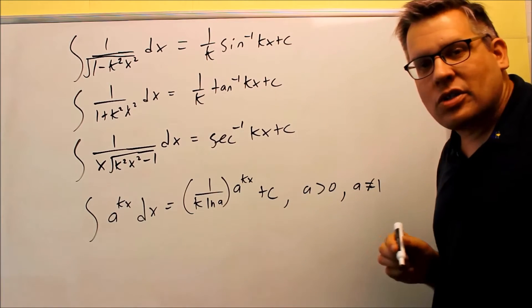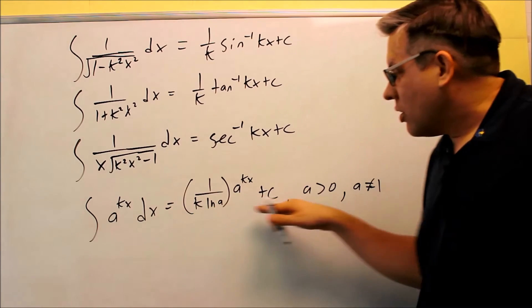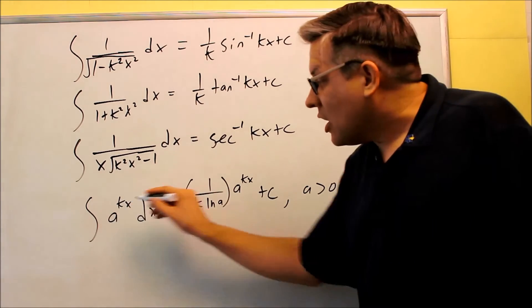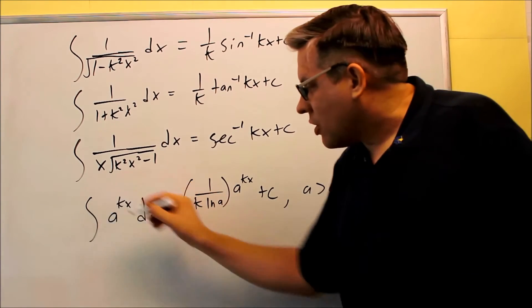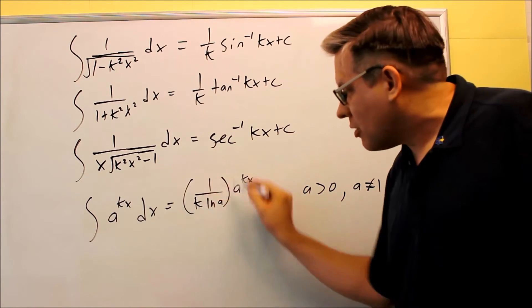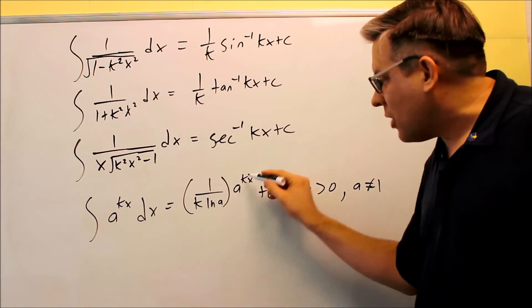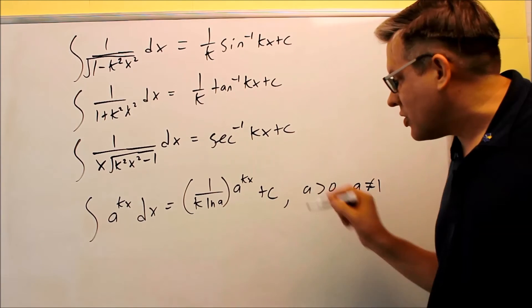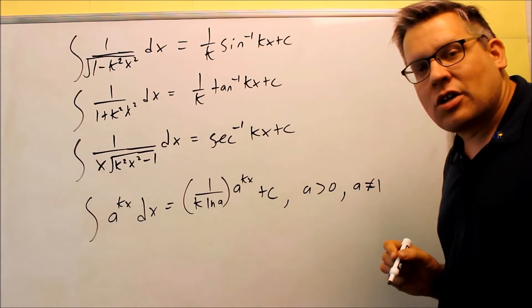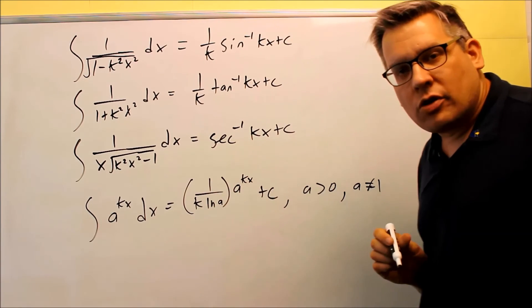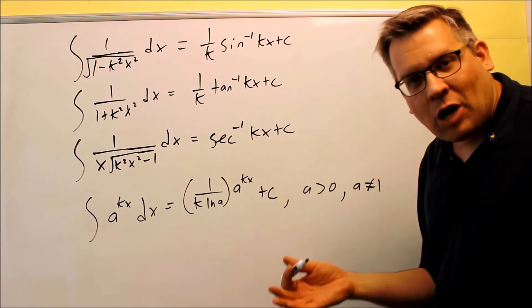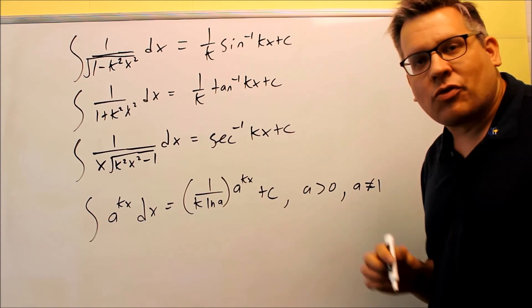This last one is one that involves exponential functions. So I have a raised to the kx taking the anti-derivative and you're going to get this formula as a result. One over k ln(a), all this is going to be a constant, being multiplied by a raised to the kx plus c. And this only works if your a is greater than zero and your a is not equal to one. So now that we've talked about all the different formulas, the future videos in this section will just be example problems talking about how you use all these different formulas.